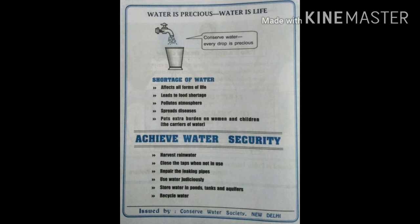You can also write vertical or horizontal slogans. Right at the bottom, you'll draw a line and write who is issuing the poster — that will be part of the question. In this case, it is issued by the Conserve Water Society, New Delhi. It may be an NGO, a government body, or even a private company, and according to the question you have to draw the poster accordingly.